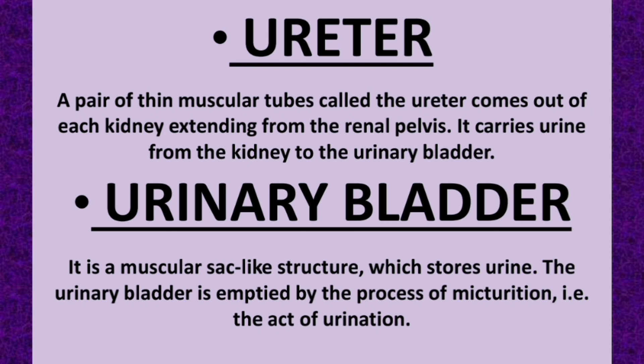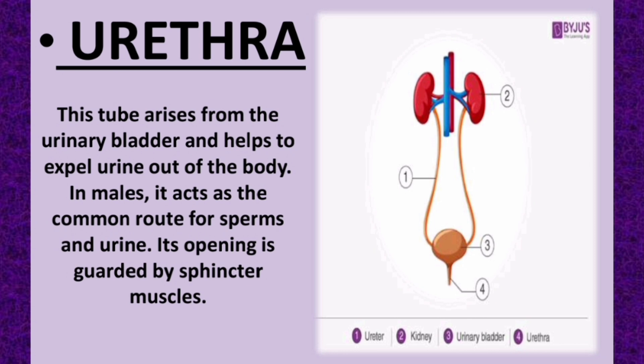The urinary bladder is a muscular sac-like structure that stores urine and is emptied by the process of micturition, which is the act of urination. The urethra is a tube that arises from the urinary bladder and helps expel urine out of the body. In males, it also acts as the common route for sperm and urine, and its opening is guarded by sphincter muscles.